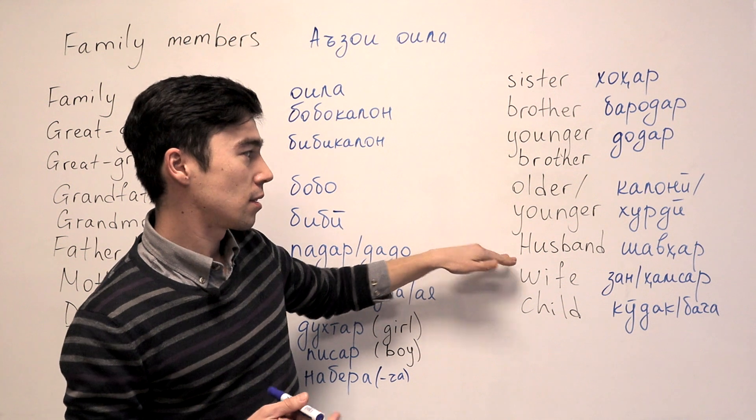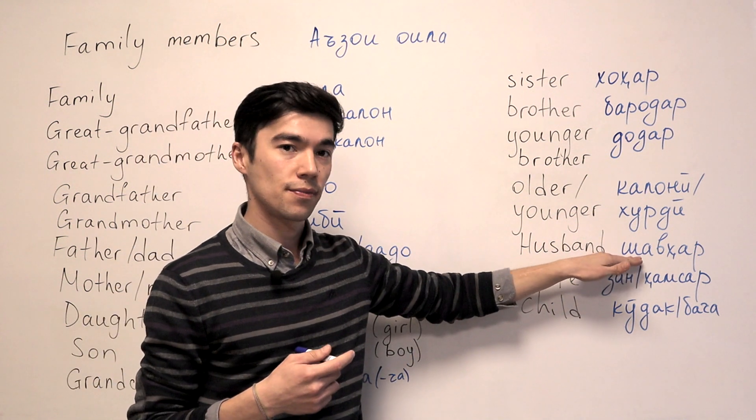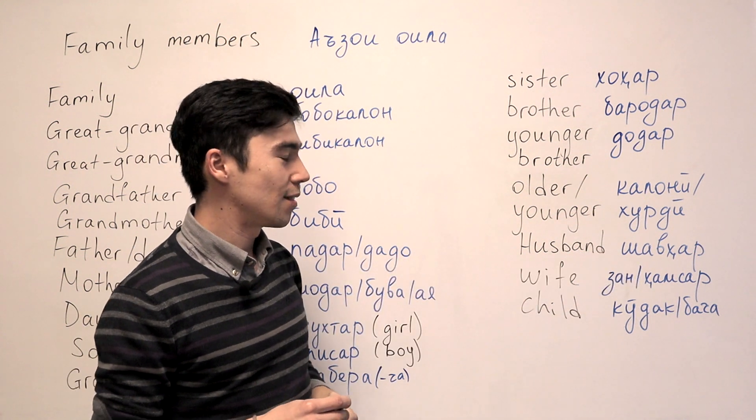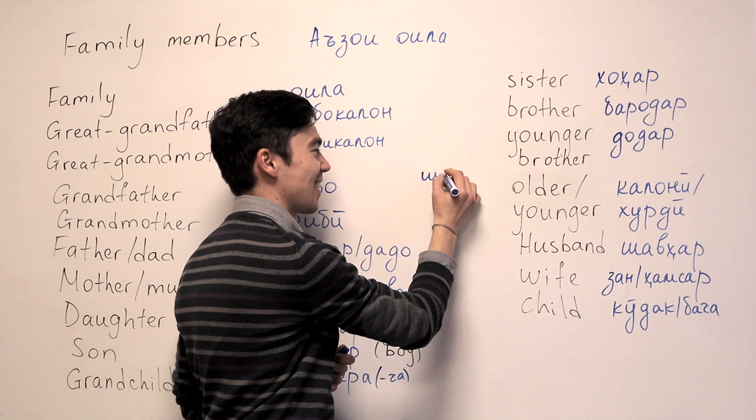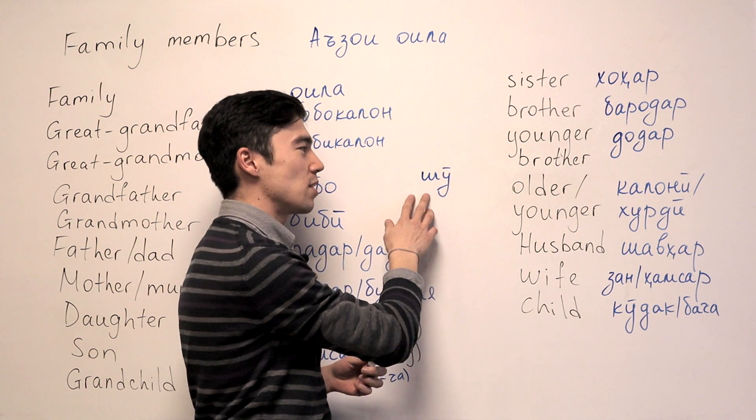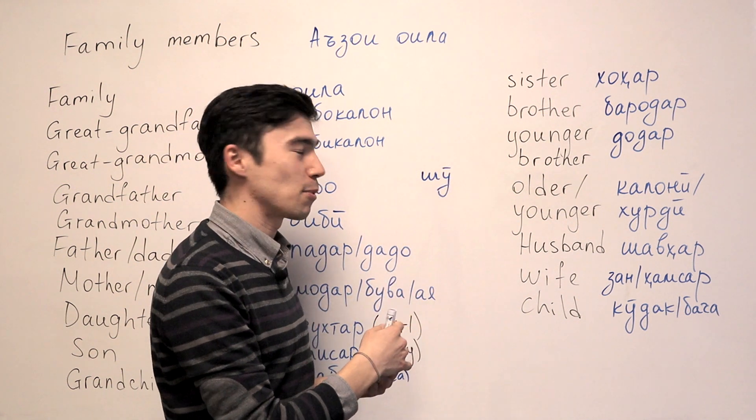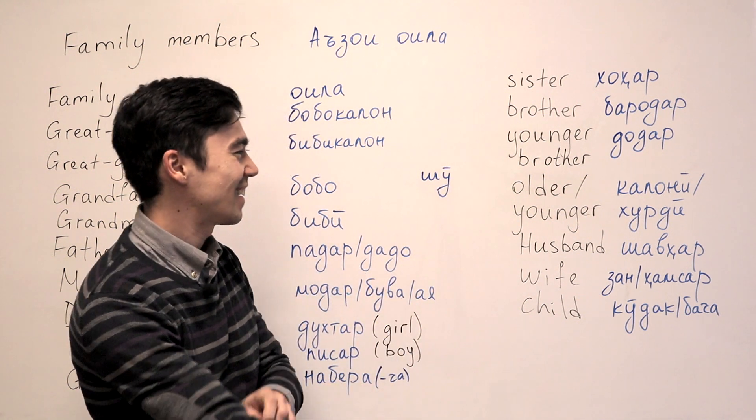So next one, husband. Husband is Shauhar. Or some people say Sh, like this. Sh is more informal. Some people say Sh.